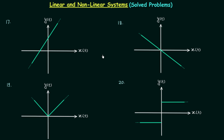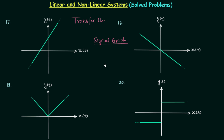In this lecture we will understand how to find out if the given system is linear or non-linear by the help of its transfer characteristics. It's important to understand what we mean by transfer characteristics and how it is different from signal graphs. In signal graphs, we plot the variation of output with respect to the independent variable, which is usually time.